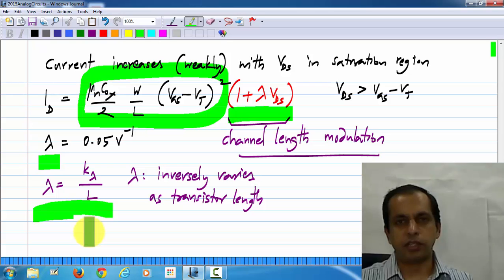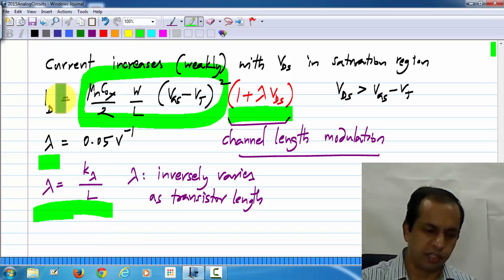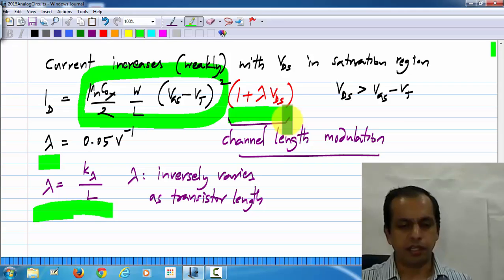So, this has some implications on the amplifier that we will look at by deriving the small signal model corresponding to this new model. So, this is the large signal model of the MOS transistor, including this additional factor due to channel length modulation. We will derive the small signal model, and see what effect it has on the amplifier.